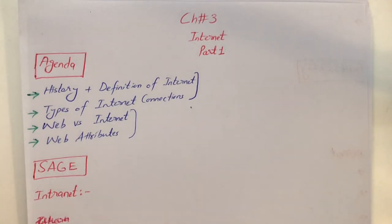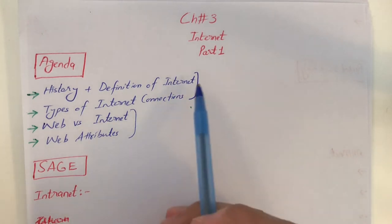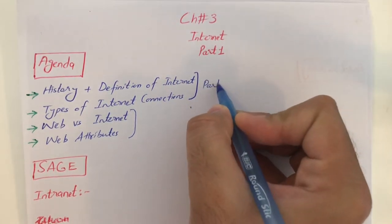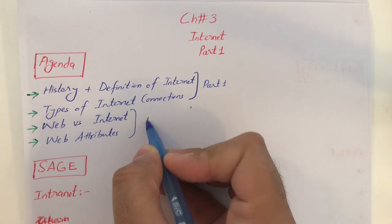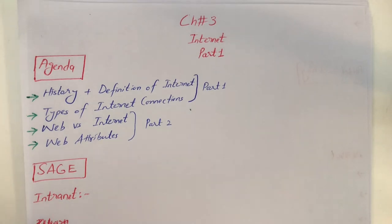Today we will talk about chapter number three, which is about the internet. Specifically, we're going to talk about the history and definition of internet, and discuss different types of internet connections such as DSL, cable, fiber optics, cellular radio, etc. These are the two main things for today. Part two will be discussed in the next video, which is about the difference between web and internet and some attributes of the web.